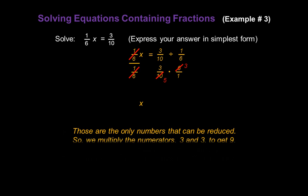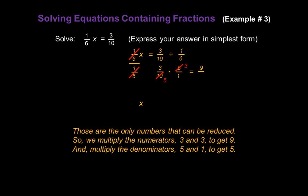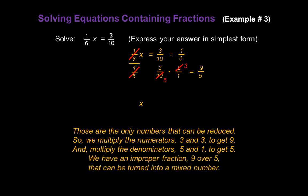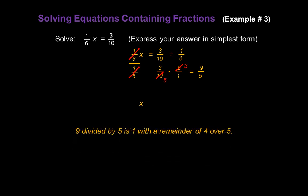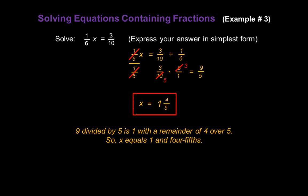Those are the only numbers that can be reduced, so we can go ahead and multiply. We multiply the numerators three times three to get nine in the numerator, and multiply the denominators five and one to get five in the denominator. Our answer is the improper fraction nine over five. We turn that into a mixed number by dividing: nine divided by five is one with a remainder of four, giving us four over five. So x equals one and four-fifths.